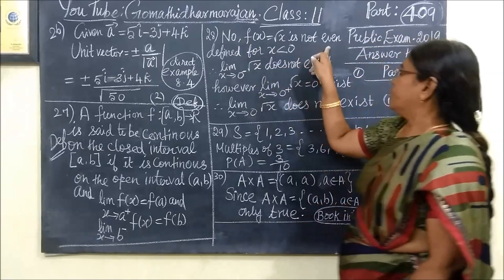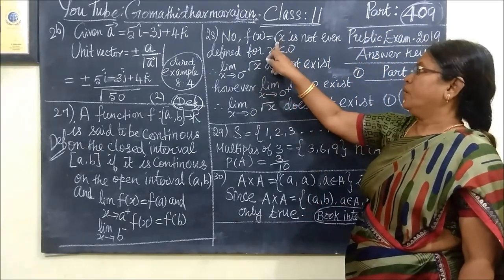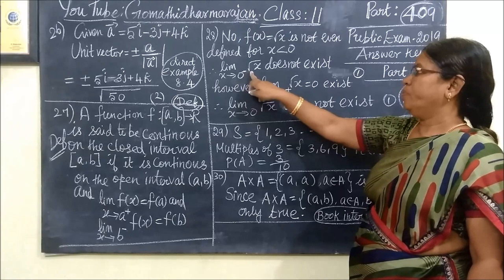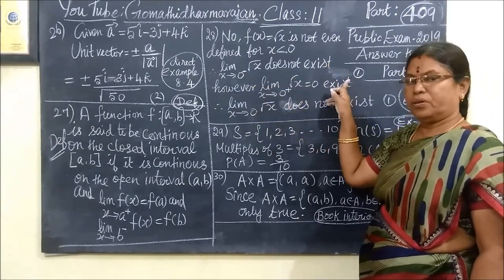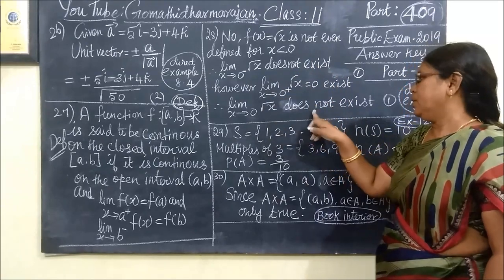Now, f of x does not exist. For root x, no mark for that. That means limit as x approaches 0 minus does not exist, and 0 plus does not exist. But on the order for that, it does not exist.